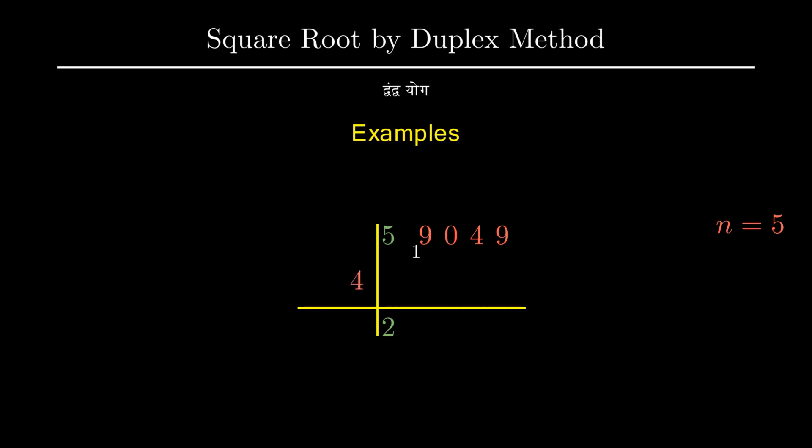The new starting number 19 is then divided by the divisor 4 to get 4 as a quotient. This is the next digit of our final answer. The remainder 3 is carried to the base to get new starting number as 30.